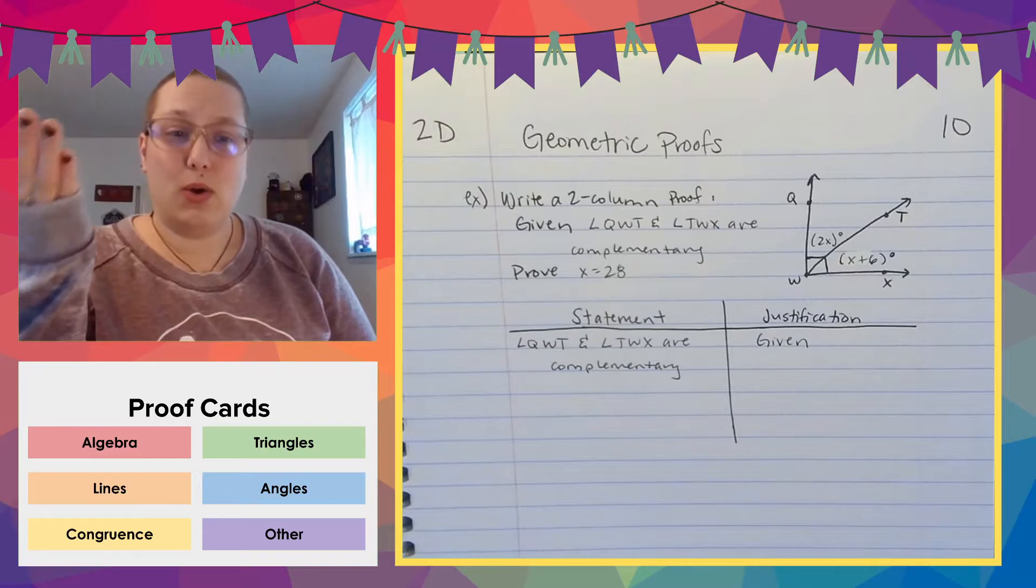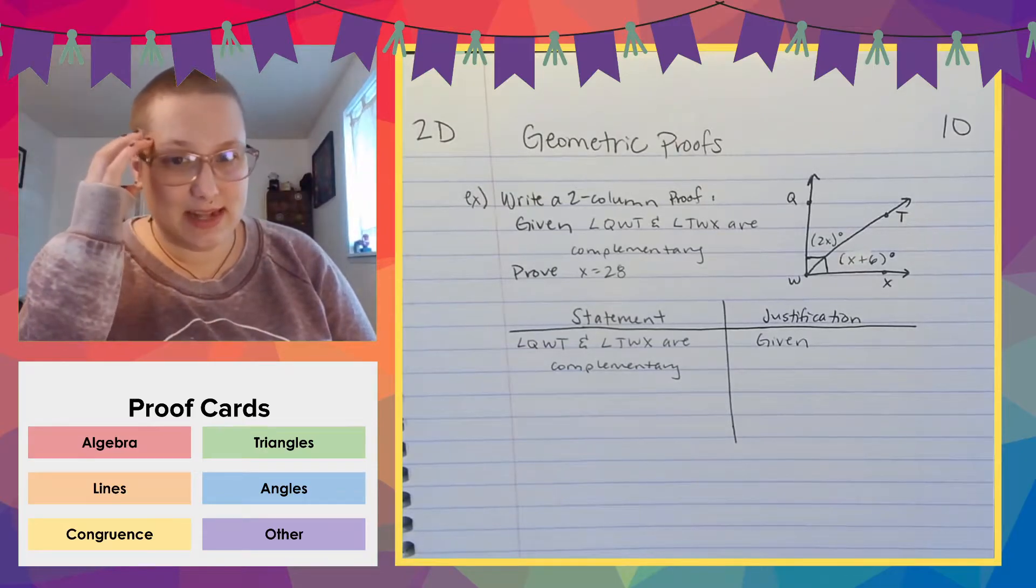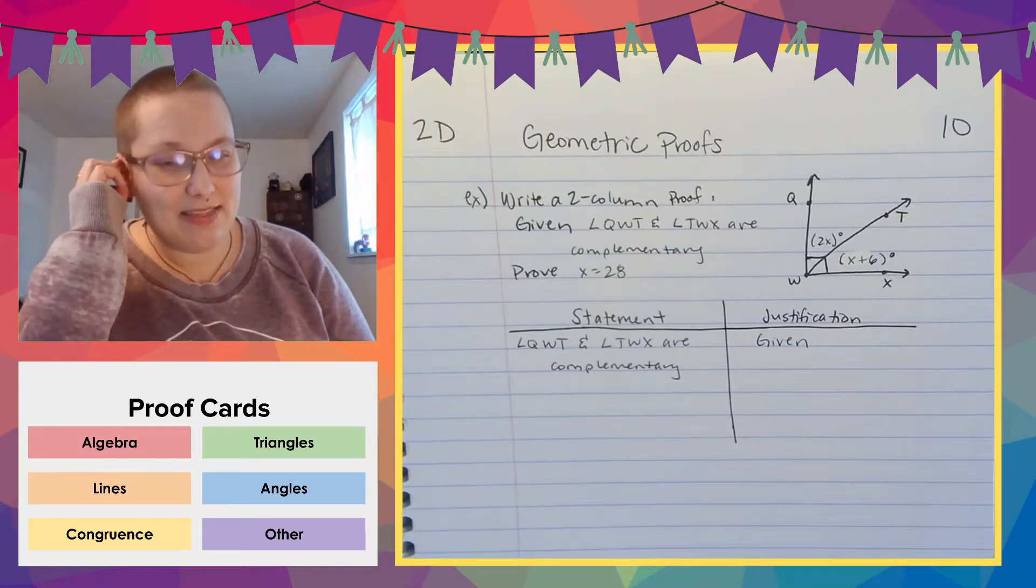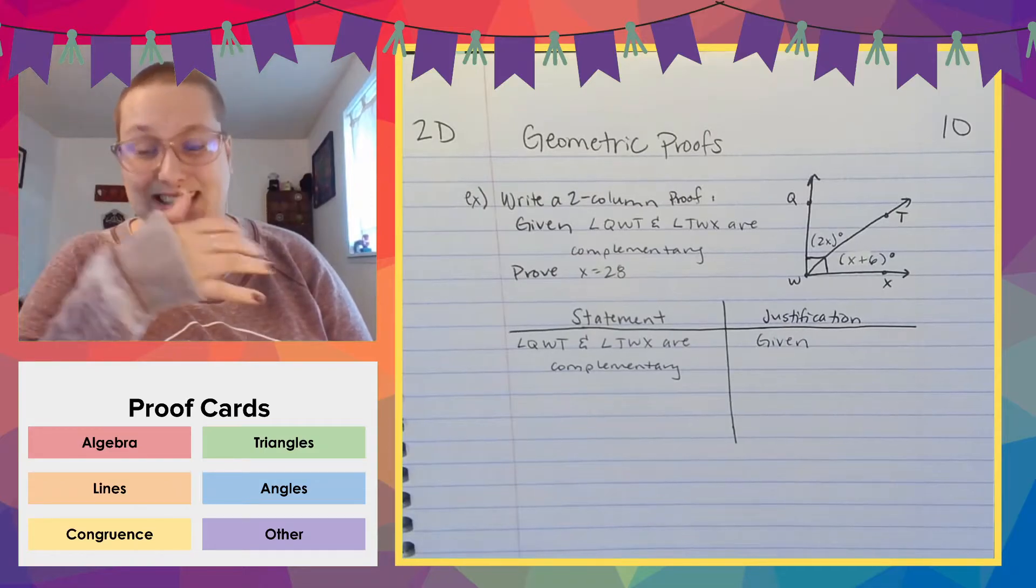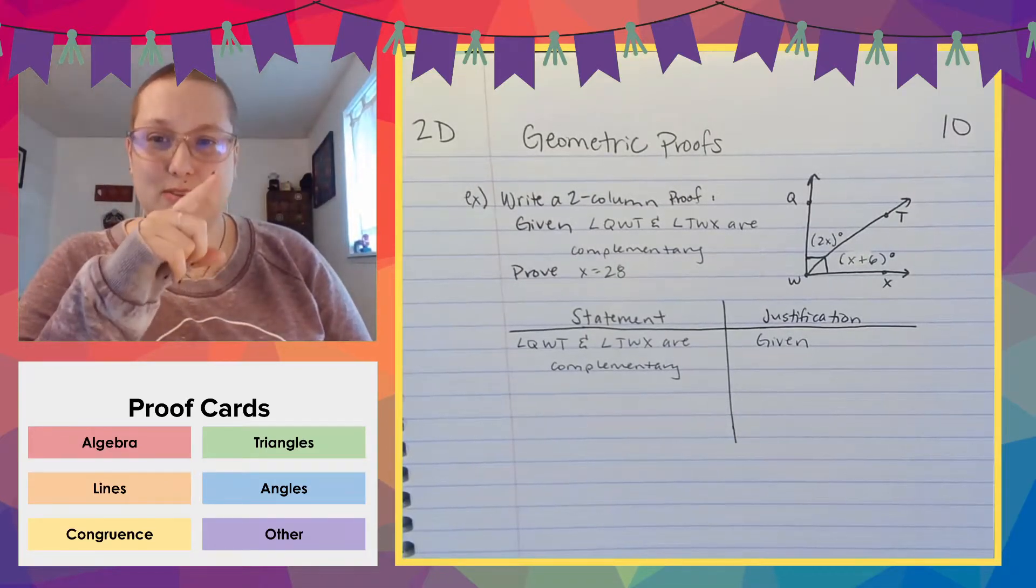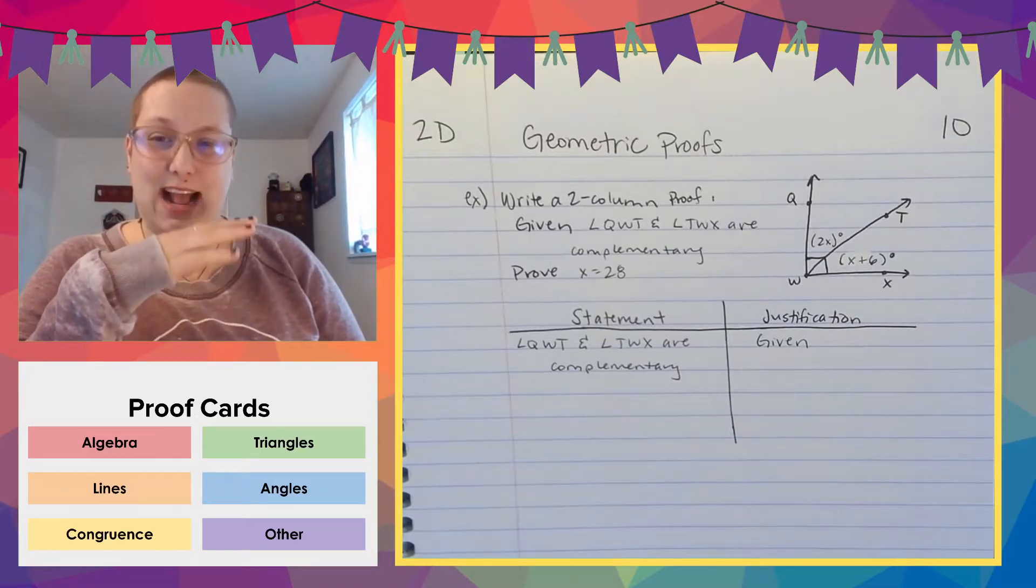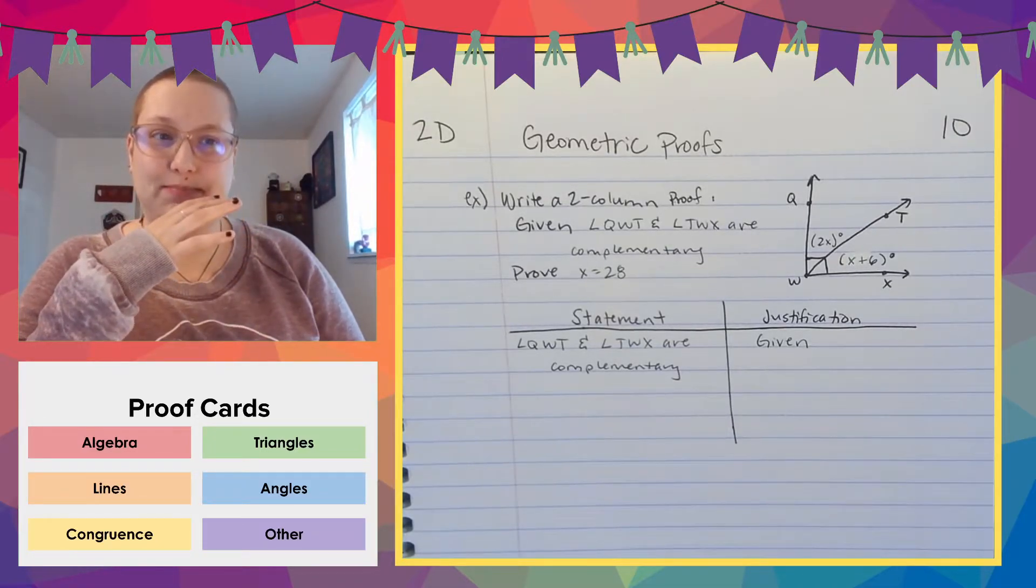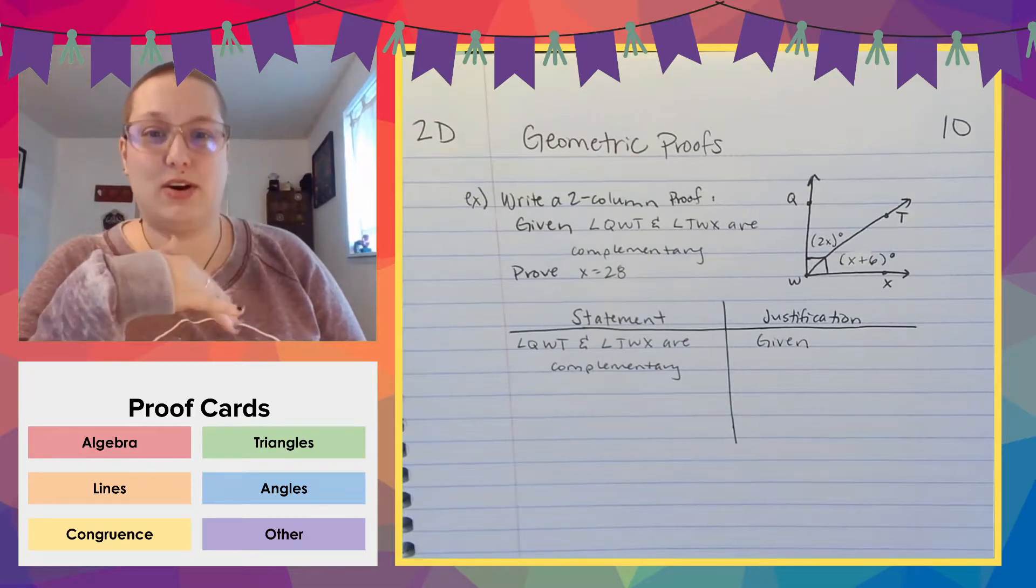Okay. So that's true. What follows logically from that statement is that that means that they add up to 90 degrees because that's the definition of complementary. Right. But also, there's more information that we're given in here that has to do with being from the picture that we can also write.